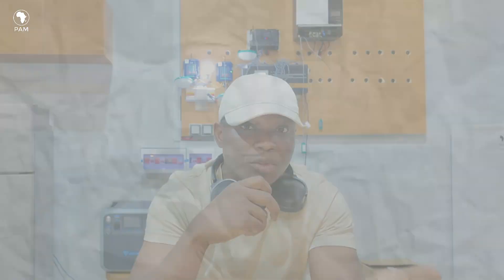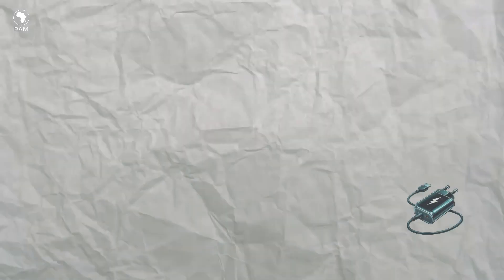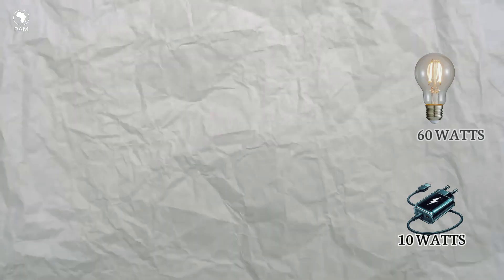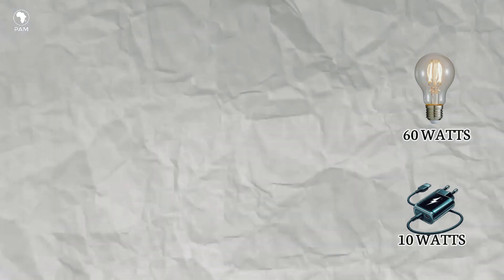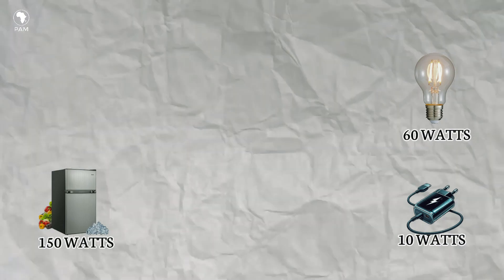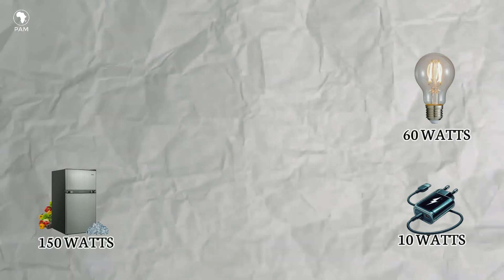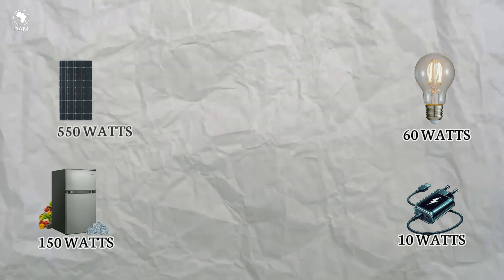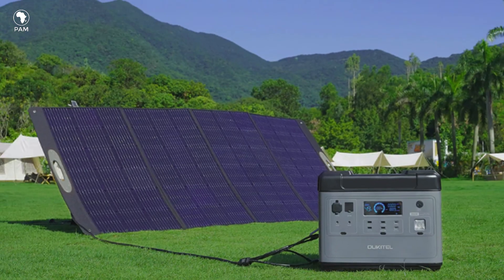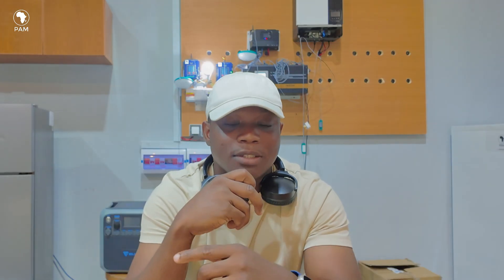Let's make it real. A phone charger might use about 10 watts. A regular Nigerian yellow bulb uses around 60 watts. A fridge might also use 150 watts or more. So when I say a solar panel is 550 watts, I'm saying that under full sunlight it can generate up to 550 watts of power at that moment. Simple, right?